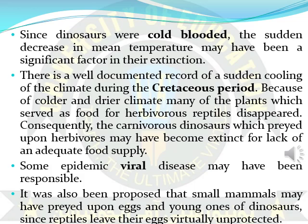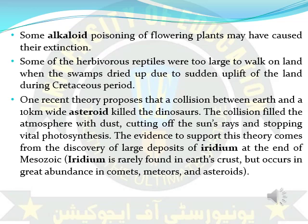Some researchers suggested that viral diseases were responsible for the dinosaurs' death. Some researchers also suggested that the eggs of these dinosaurs were eaten or preyed upon by small mammals. Some researchers suggested that the plants were poisonous towards the flowering plants, and maybe that caused the dinosaurs' extinction. Some researchers suggested that swamps were the basic cause of their death.